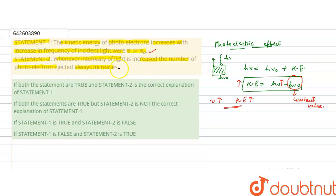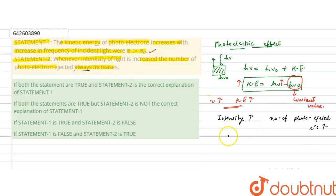Statement two states that whenever intensity of light is increased, the number of photoelectrons ejected always increases. When intensity is increased, the number of photoelectrons does increase, but not always. It increases only when the incident frequency is greater than the threshold frequency, and after increasing to a certain extent it remains constant. So the word 'always' makes this statement incorrect.